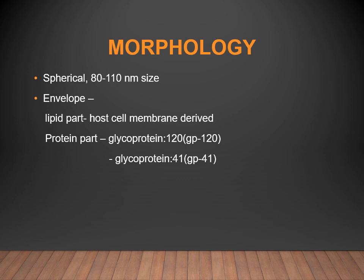Glycoprotein 120 helps in binding to the receptor when this virus attacks the host cell. After binding, the next step is fusion — that is, fusion with the host cell, which is carried out by glycoprotein 41.